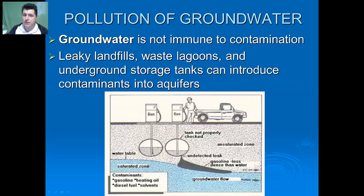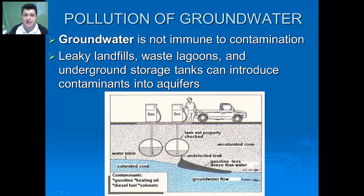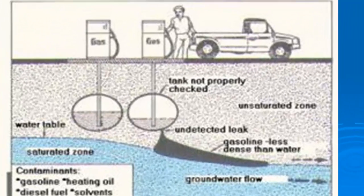Groundwater is not immune to contamination. Leaky landfills, waste lagoons, and leaking underground storage tanks can introduce contaminants into aquifers. Here in this image we have a picture of a gas station which has two underground storage tanks. If it's not monitored correctly and if it's made out of material that's not resistant to corrosion, it's possible for a rupture to form and then the petroleum product to leak into the ground.